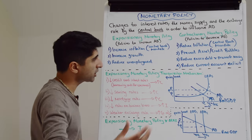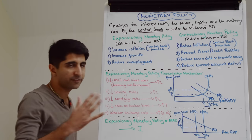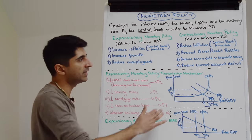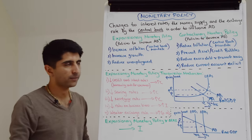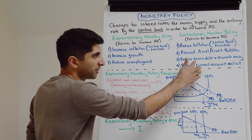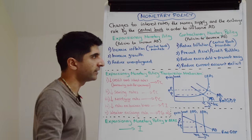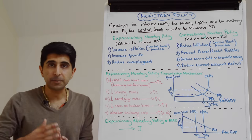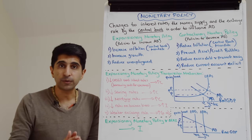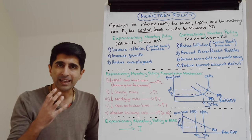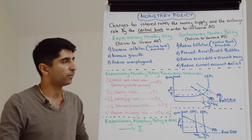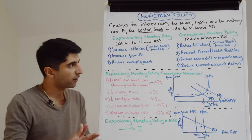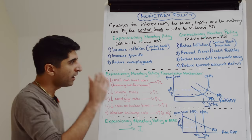Contractionary monetary policy via reducing AD can also help in reducing the current account deficit — a more theoretical reason. As AD falls, growth falls, incomes fall, and therefore there'll be less spending on imports, which in theory will narrow a current account deficit.